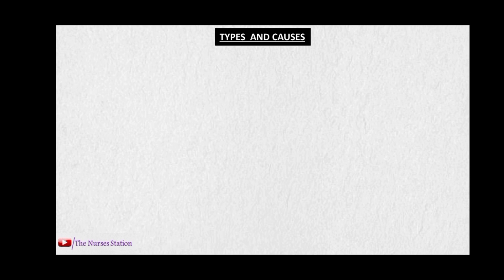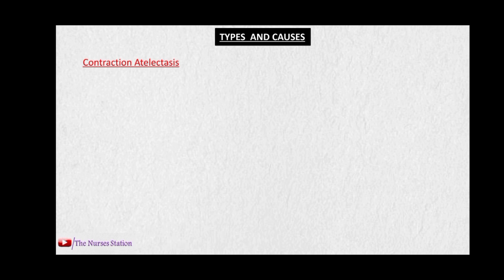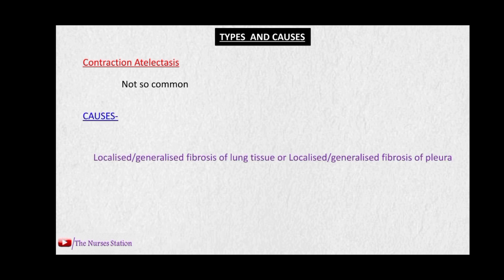The next is contraction atelectasis, which is not so common and is a very rare condition. The causes include localized or generalized fibrosis of lung tissue, which prevents the lung from expanding, or it may be caused by localized or generalized fibrosis of the pleura. Remember that fibrosis prevents expansion of lung tissue and increases lung recoil, which may produce atelectasis.